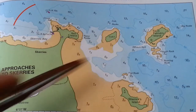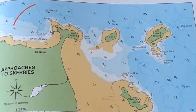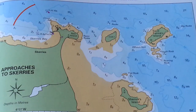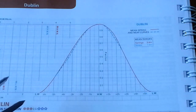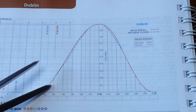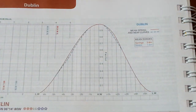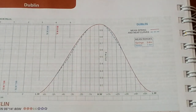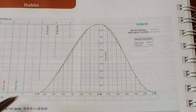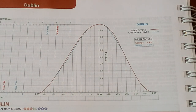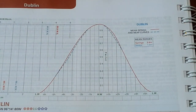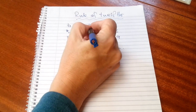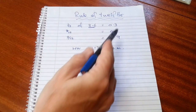I would like to go through there, but the tide isn't particularly high today, so I'm going to use the Rule of Twelfths to decide whether I need to go through here or round. It's a very simple rule and it can be used anywhere where you've got a nice tidal flow. This is a tidal chart for Dublin and as you can see it's a lovely smooth curve.